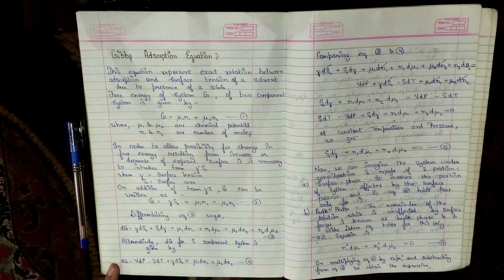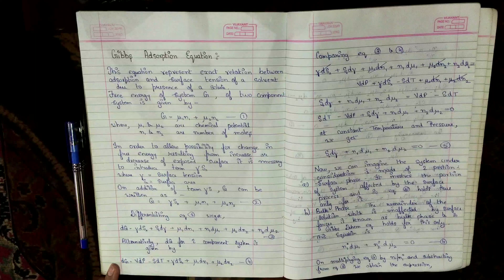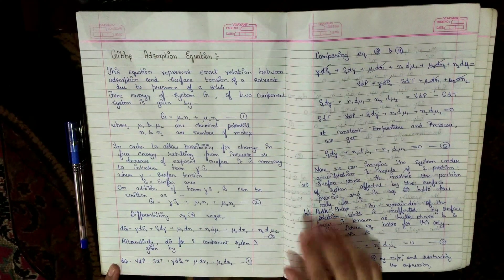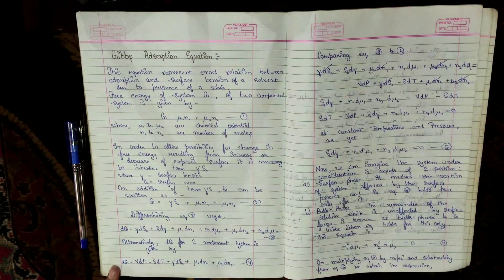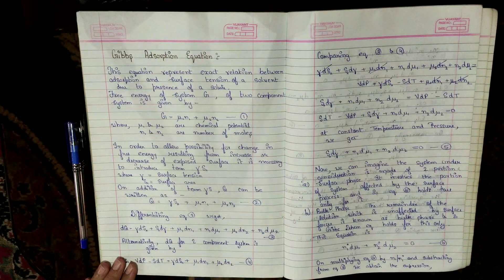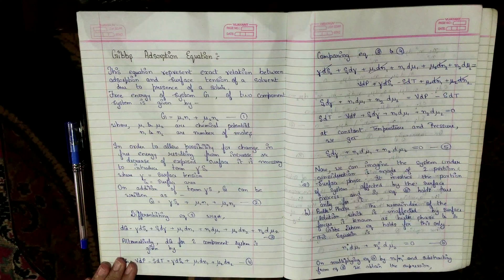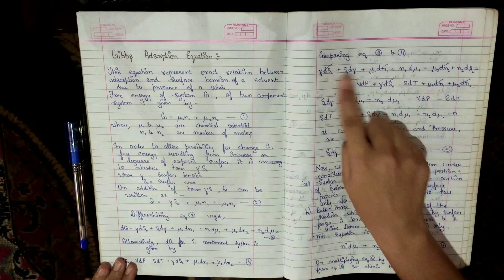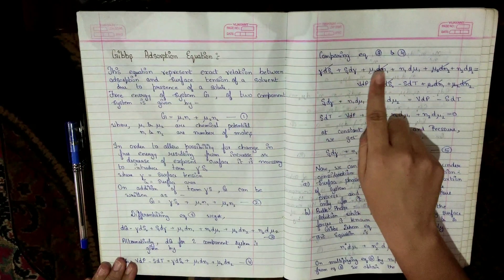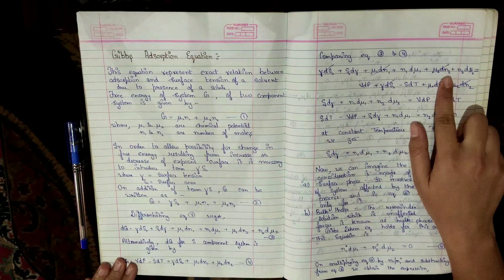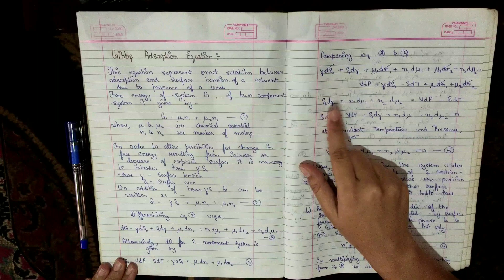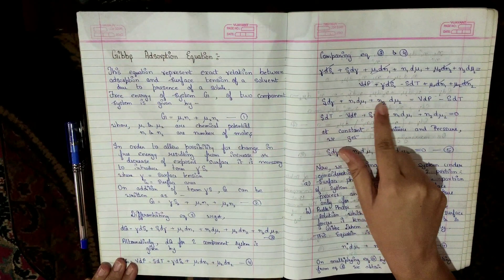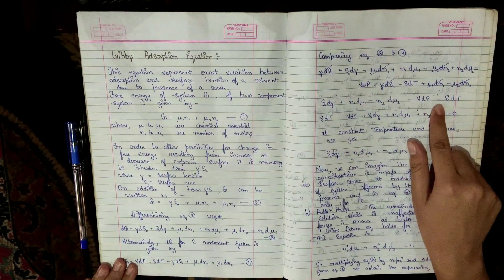Comparing equations 3 and 4, since dG is common in both, we equate them. The terms γ·dSₐ, μ₁·dn₁, and μ₂·dn₂ cancel from both sides. The equation reduces to: Sₐ·dγ + n₁·dμ₁ + n₂·dμ₂ = V·dP − S·dT.